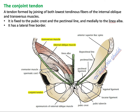It is also attached to the pectinal line laterally. The conjoined tendon has a free border through which the inguinal canal will pass.